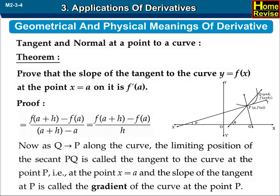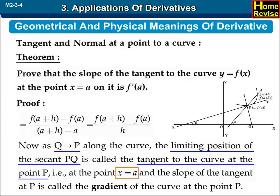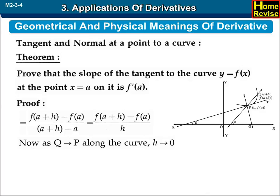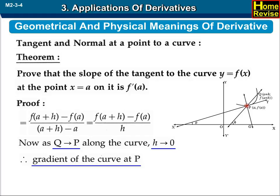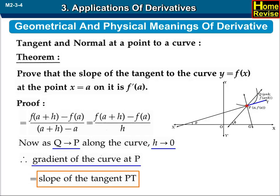Now, as Q tends to P along the curve, the limiting position of the secant PQ is called the tangent to the curve at the point P, that is, at the point x equals a. The slope of the tangent at P is called the gradient of the curve at the point P. As Q tends to P along the curve, h tends to 0.